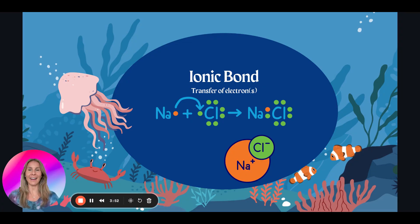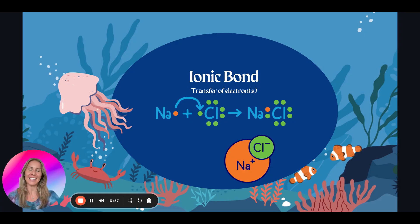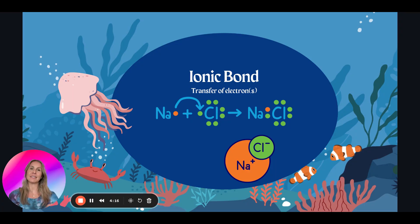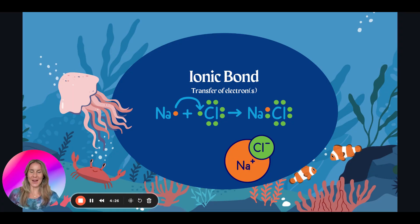A cation is positive — think 'cat paws,' cat ion is positive. An anion is going to be negative. So to summarize: covalent bonds — think couple, they share things. Hydrogen bonds are weak, but they're couples attracting other couples. And ionic bonds form charges: cations are positive (cat paws), and anions are negative.